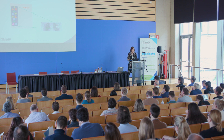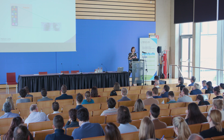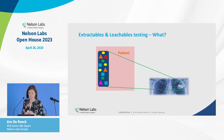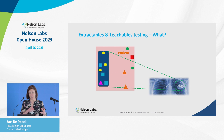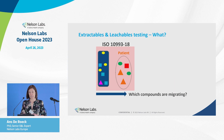So what is extractables and leachables testing? Here we have the example of a pacemaker implanted in a patient. On this device there can be compounds still present from the manufacturing process, the packaging, or the sterilization process. These compounds might leach into the patient and cause health issues. In E&L testing we are interested in which compounds can migrate from the device into the patient and at which concentrations. This is described in ISO 10993 Part 18.